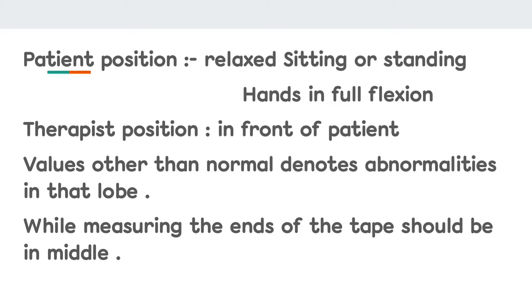Patient position: relaxed sitting or standing, hands in full flexion. Therapist position: in front of patient. Values other than normal denote abnormalities in that lobe. While measuring, the end of the tape should be in the middle.